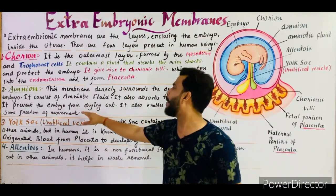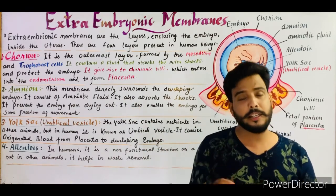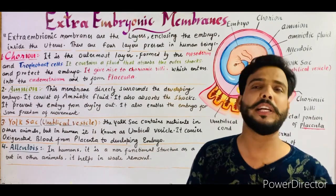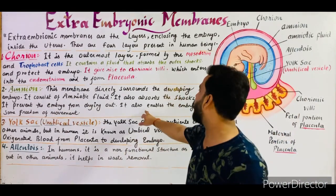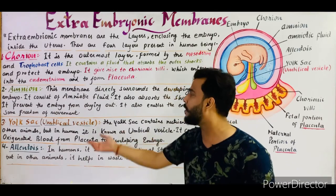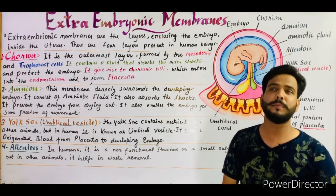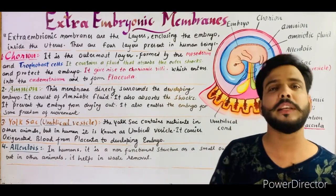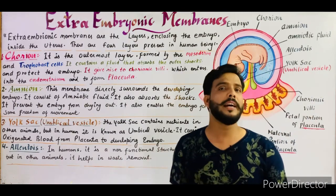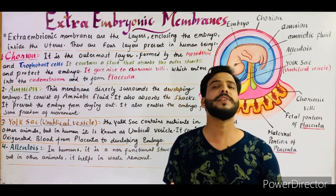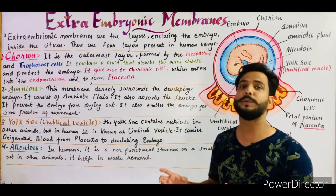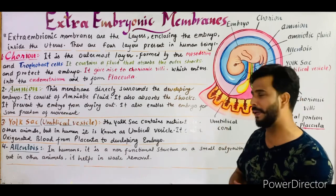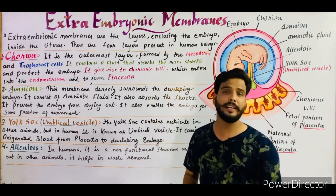The amniotic fluid creates moisture for the developing embryo and prevents it from drying off. It also enables freedom of movement — after four to five months of development, the embryo moves around, and the amniotic cavity provides the space for the embryo to move freely inside the uterus.